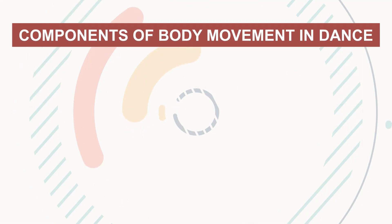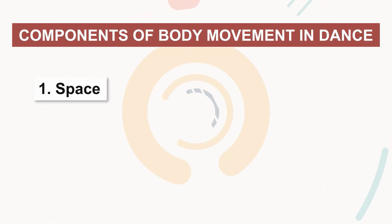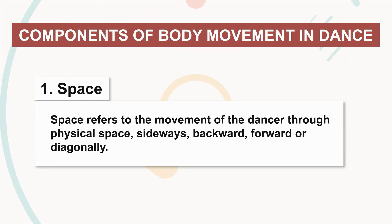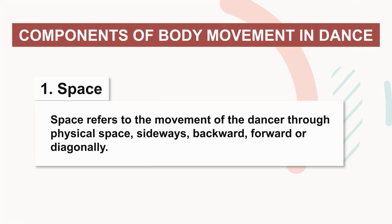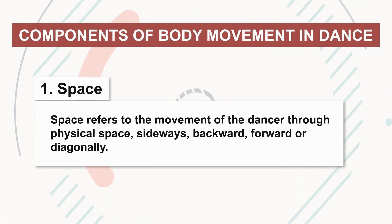Components of Body Movement in Dance. 1. Space — Space refers to the movement of the dancer's true physical space: sideways, forward, backward, or diagonally.